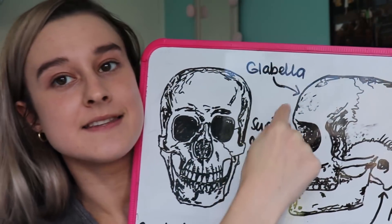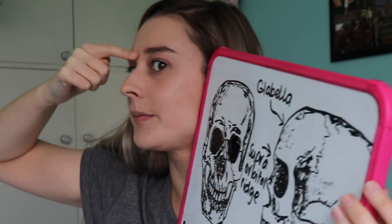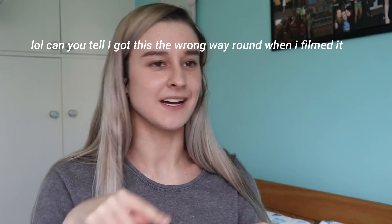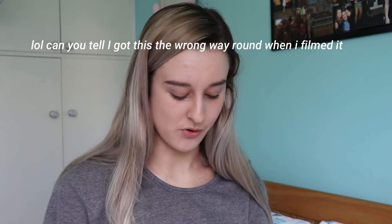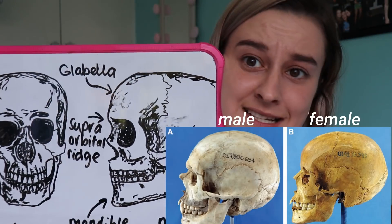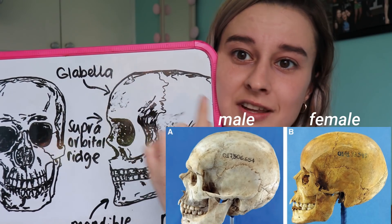Now this really will be a whistle-stop tour, so I'm going to link all of my references in the description. The glabella is this part of the forehead — the bit between your eyes and the top of your head. In women, the glabella is generally more vertical. In males, it kind of slopes a bit more. So from my picture, I would probably say this was a female glabella, because you can see it's almost a right angle before it turns.